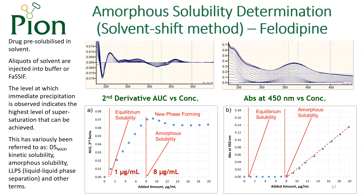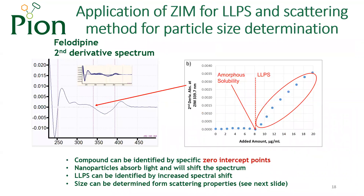For the example of felodipine, which is known to have a crystalline solubility value of 1 microgram per milliliter, the amorphous solubility has been determined as 8 micrograms per milliliter in the microdisc profiler experiments. We can also use specific zero-intercept points in the second derivative spectra to find the concentration at which this second phase appears, and then look at the scattering information in the region of the spectrum where felodipine does not usually absorb light to determine the size of the phase-separated drug-rich droplets.